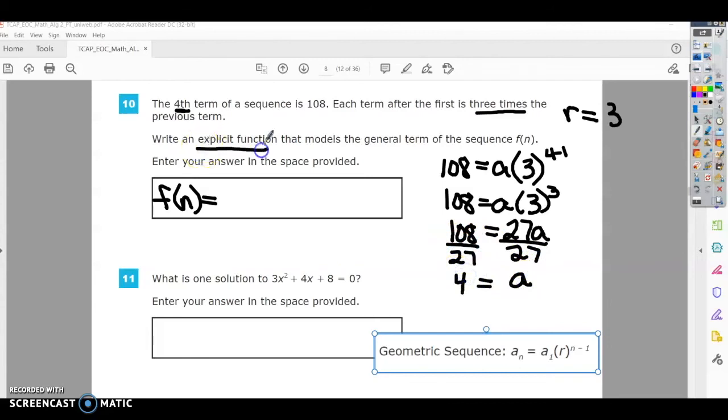Now to write an explicit function, basically meaning just a function from this right here. So we're going to have, instead of a sub n, it told us to use f of n. So we put f of n equals, our first term is 4 times r, in this case is 3, that was given information as well. And then to the, since we're using n, n minus 1. So that would be our explicit function.